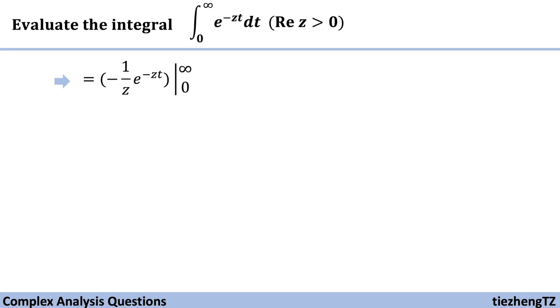Next step, we just need to substitute and it becomes minus 1 over z times e to the power of minus z times infinity, and then minus minus 1 over z.